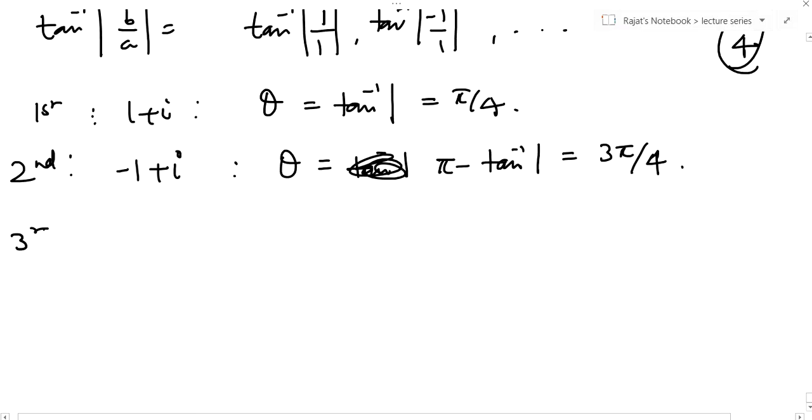If it is the third quadrant, then we will get minus 1 minus i, and theta will be tan inverse 1 minus π, and you will get minus 3π by 4.